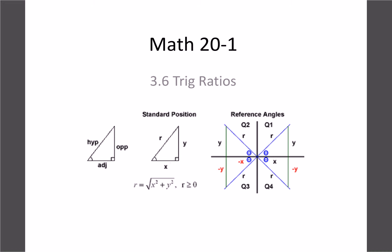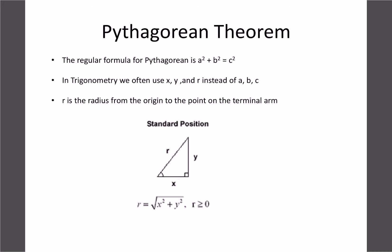All right, today's lesson we're going to continue with our angles in different locations, and we're going to relate this to our three trig ratios — our sine, cos, and tan. We're going to start by seeing how the Pythagorean theorem relates to different coordinates and different angles.